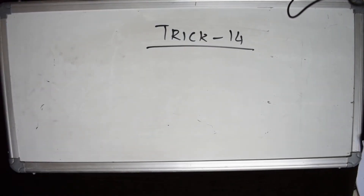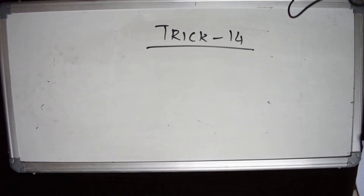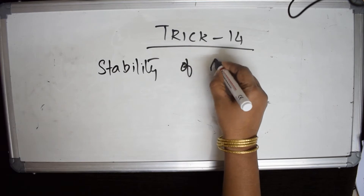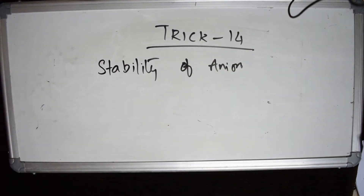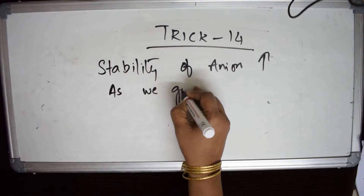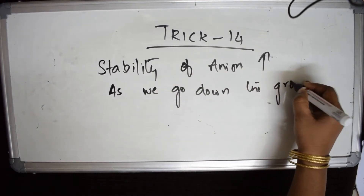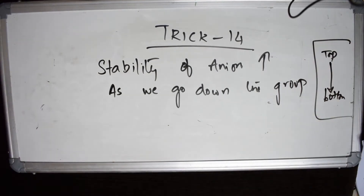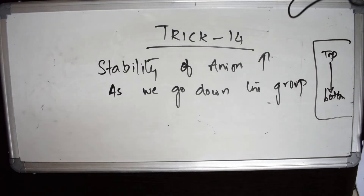Let us come back and do trick number 14 again. I'm going to explain a trick for solving stability questions. Based on polarizability, the stability of the anion — the negative ion — increases as we go down the group. When we go from top to bottom in a group, the stability of the anion increases, and this increase is based on polarizability.